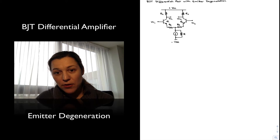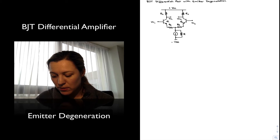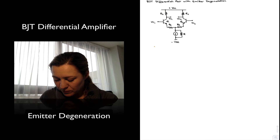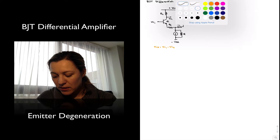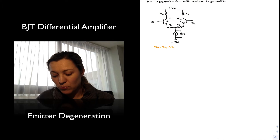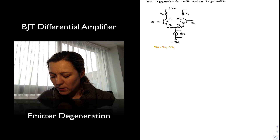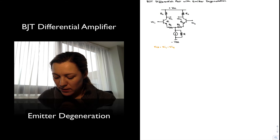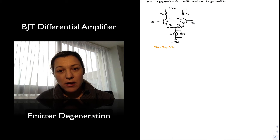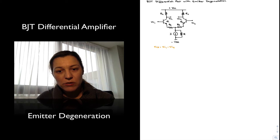Since this is a differential amplifier, the input is taken differentially across the base of Q1 and the base of Q2, so the differential input signal will be equal to Vin1 minus Vin2. The output can be taken differentially across the collectors as Vout1 minus Vout2, or if we are building a single-ended differential amplifier, we will just take the output directly from the collector of Q2. I have also added a current source in the tail for biasing purposes, and since the output resistance of that current source is going to affect the performance of the circuit, I have modeled it as a resistor R in parallel with the tail current source.